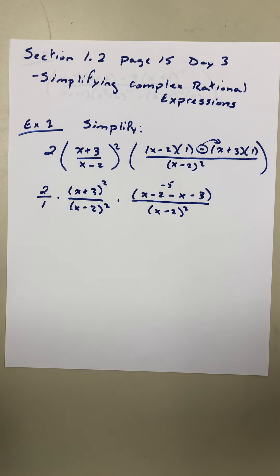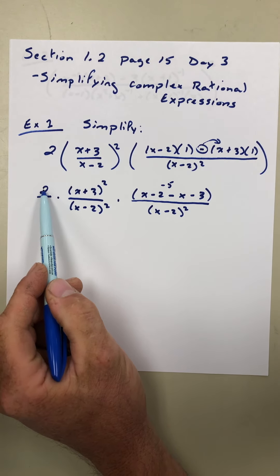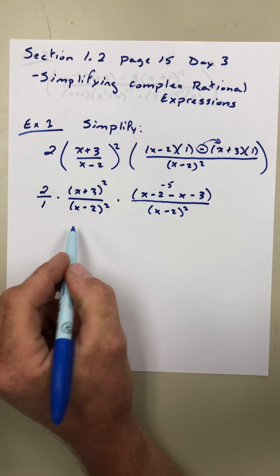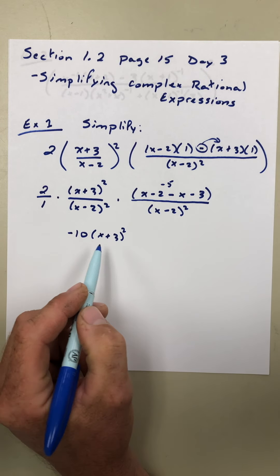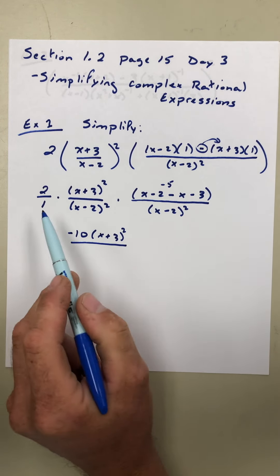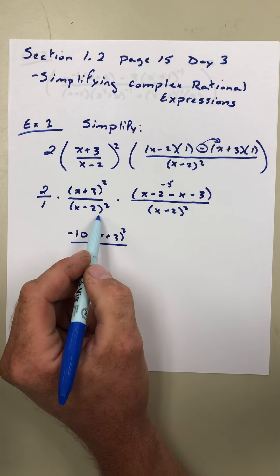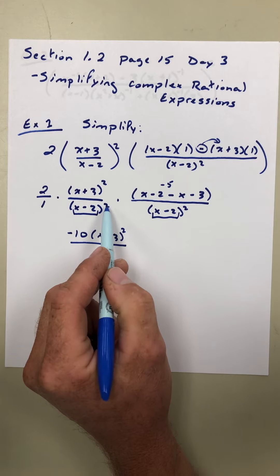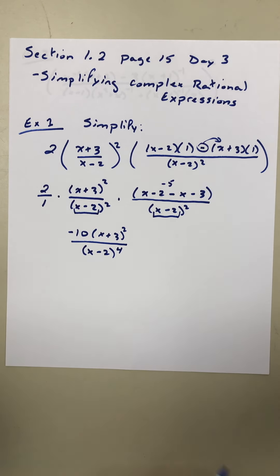Now I can go ahead and combine similar things. Two times negative five — those are both monomials — gives us negative ten. We're going to leave x plus three squared alone because we don't really need to multiply it out. On the bottom, we have one times a quantity times another quantity. The bases are the same, x minus two, so we can add the exponents. We get x minus two to the fourth, and that's a nice clean simplified answer.